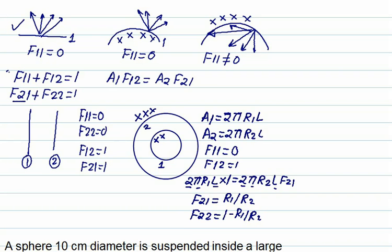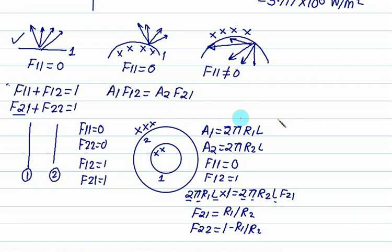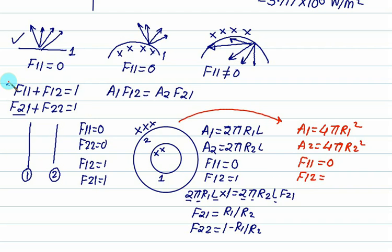If we model these two as sphere, then what is A1? A1 is 4 pi R2 square, still equals to 0 because this surface radiation will never fall on the surface 1. So by rule number by this rule F12 is equal to 1.